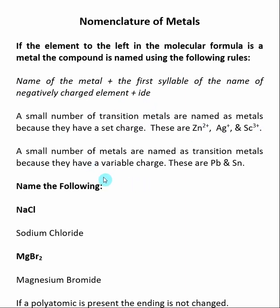There is a small number of metals that are named as transition metals, so even though it's a metal, it's not named using these rules. These two elements are lead and tin.